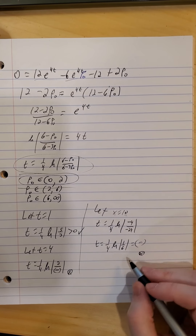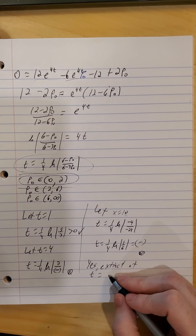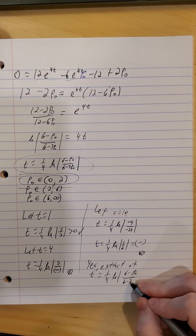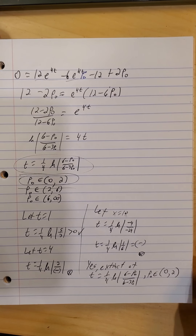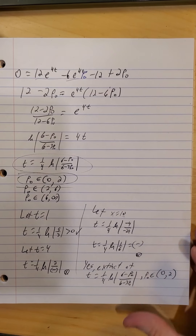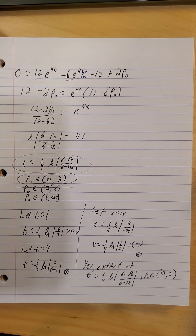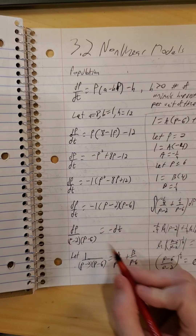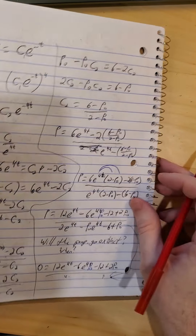So there is only one interval where extinction occurs. That's at time t equals one-fourth times the natural log of (6 minus p naught) over (6 minus 3p naught), where p naught is in the interval (0, 2). As a heads up, depending on where you choose to put the negative sign, some answers may look slightly different, but they still boil down to the same ratios and the final answer won't change.